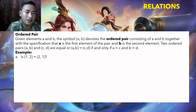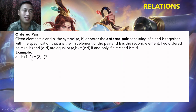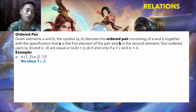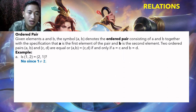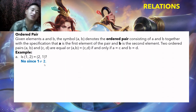Is (1, 2) equal to (2, 1)? These ordered pairs are not equal. Why? Since 1 is not equal to 2 — 1 is not equal to 2, and 2 is not equal to 1. So the first elements (1 and 2) are not equal, and the second elements (2 and 1) are also not equal.